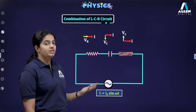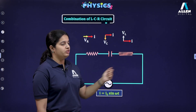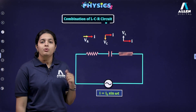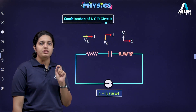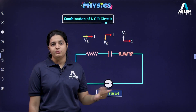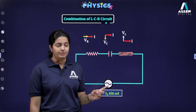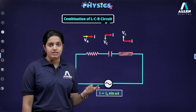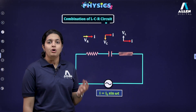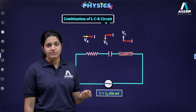When you combine all three phasor diagrams you get the resultant voltage, which is the sum of the potential differences across all three components — because components in series have potential differences that add to give the total applied potential difference. Although we are using vector analysis here, voltage and current are not vector quantities; they are scalar. We use vector analysis only because they are sinusoidally varying and change direction in regular intervals of time, so they behave like vectors.